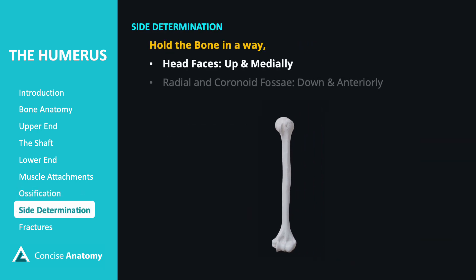To determine the site of the humerus, hold the bone with the head facing up and medially. The radial fossa and coronoid fossa should be positioned down and anteriorly. Can you guess the site of the humerus given below? It is the left humerus.